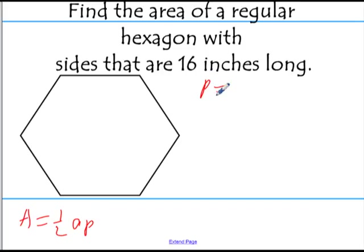The perimeter is going to be pretty easy here because we know the sides are 16 inches, so that's just 16 times 6, which is 96. Now, we just need to figure out the length of the apothem.